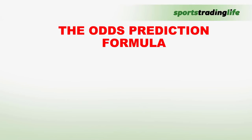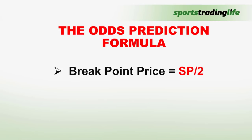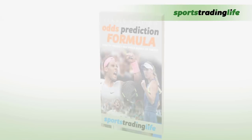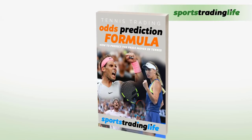Let's run through the odds prediction formula once again. To work out the price after the favorite scores a break point, take their starting price and divide it by 2. To work out their set point price, take the break point price and divide that by 2. Or, to work it out before the match, take their starting price and divide it by 4. You could also note that once they've hit the break point price, if they're broken back, they're going to go back to that starting price.